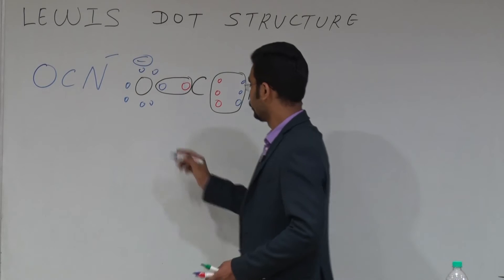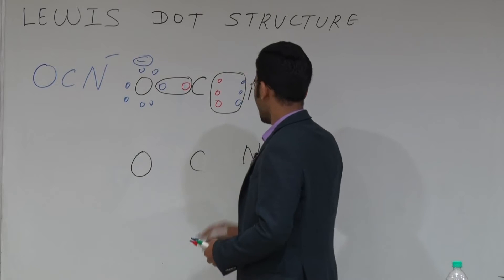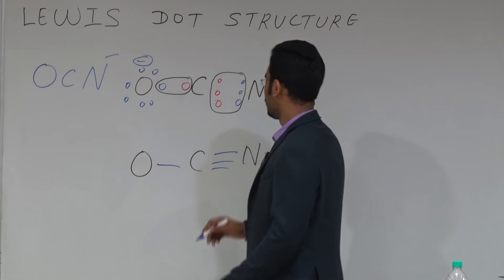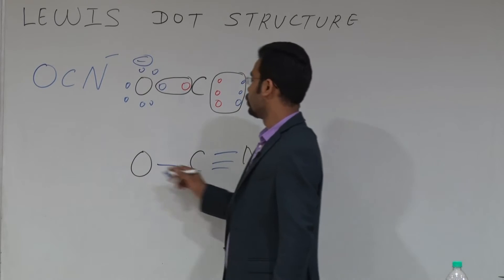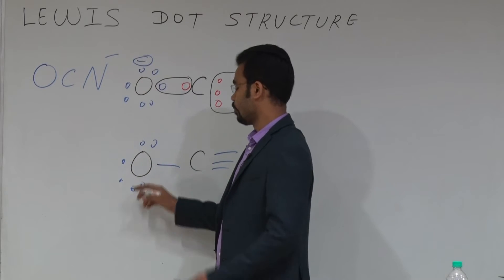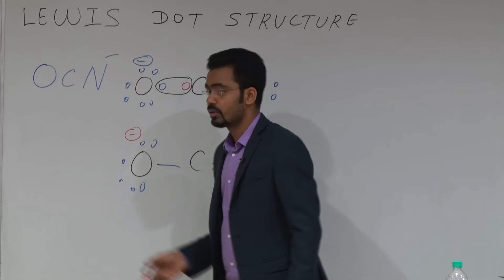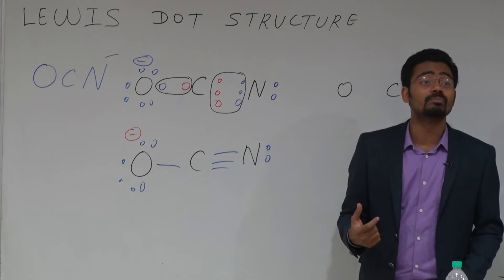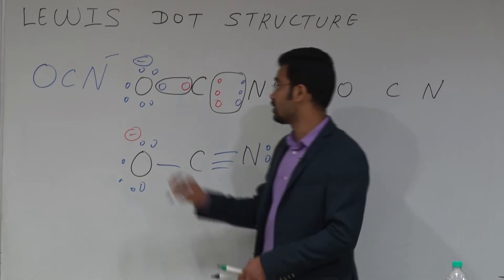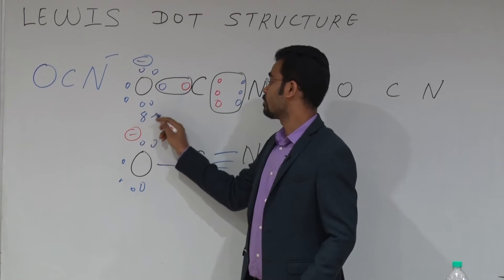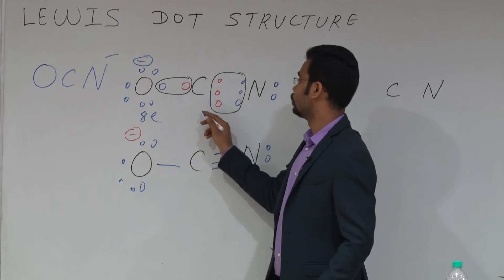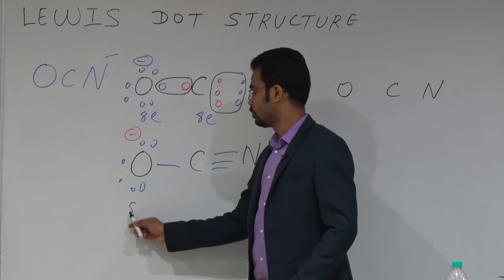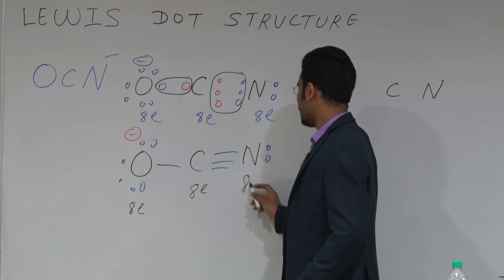The structure is: oxygen single bond carbon, carbon triple bond nitrogen. Carbon has no lone pair, nitrogen has one lone pair, oxygen has three lone pairs and one negative charge. In this structure you have to show the valence electrons: eight valence electrons on oxygen, four on carbon, and six on nitrogen giving eight total. So always write the electron count after drawing the structure.